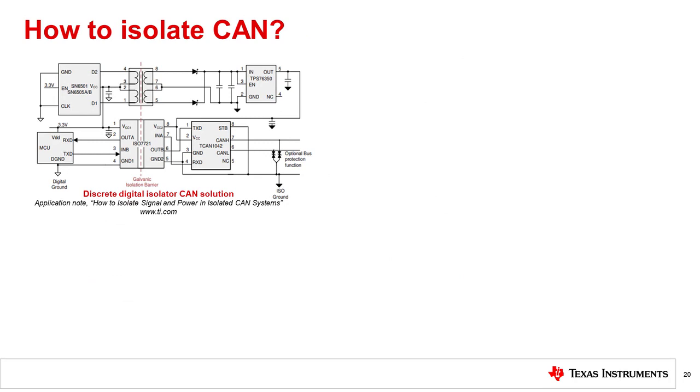When building discretely, a typical isolated CAN solution includes a digital isolator placed between the MCU or CPU to isolate the CAN interface transmission lines. A CAN transceiver, as well as isolated power supplies to maintain the isolation barrier, will also be used.